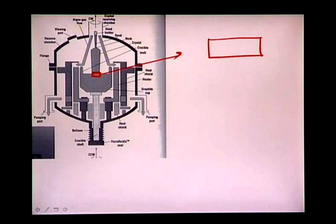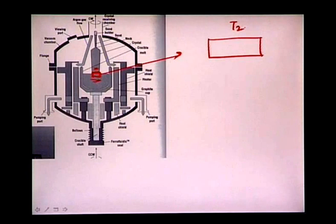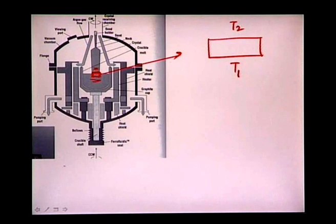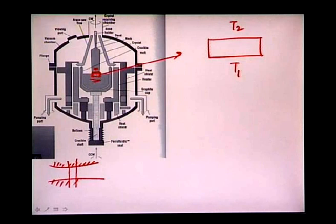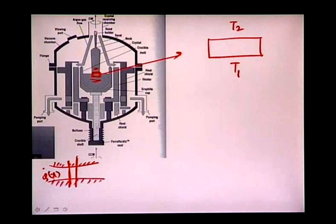To characterize silicon crystal structures, consider the transition from liquid to solid. You have liquid state below, solid state above, and a zone of fusion between them. Using Newton's law of cooling: heat flows from the higher-temperature liquid (T1) to the lower-temperature solid (T2), with heat flux q̇_x = −kA(dT/dx).